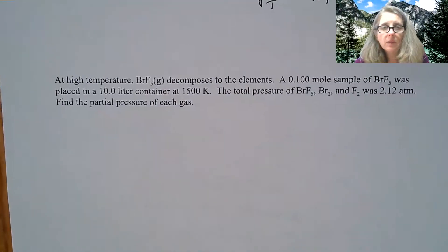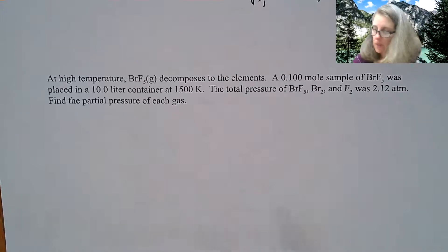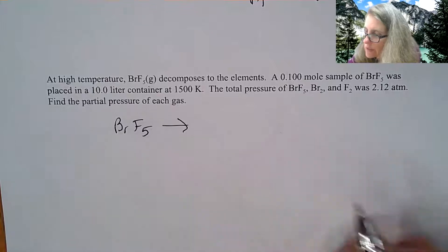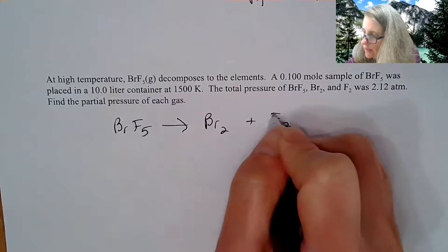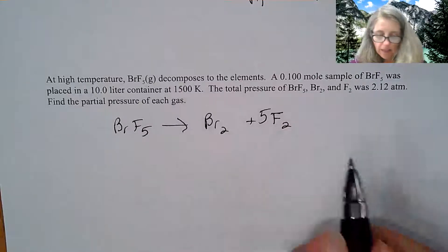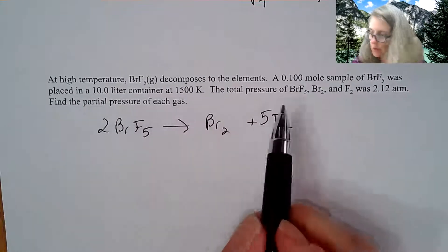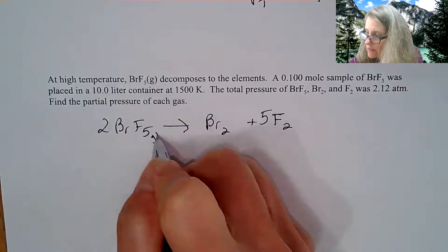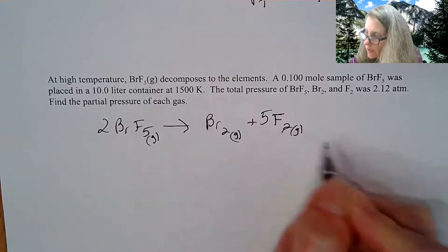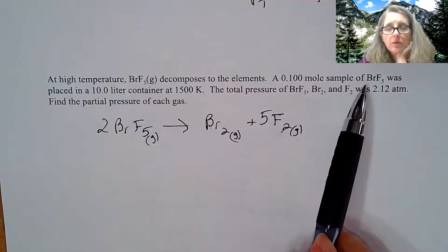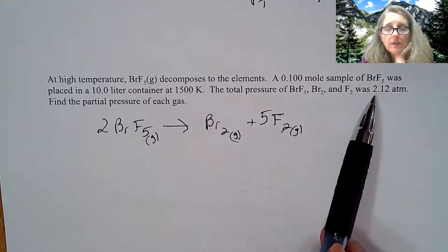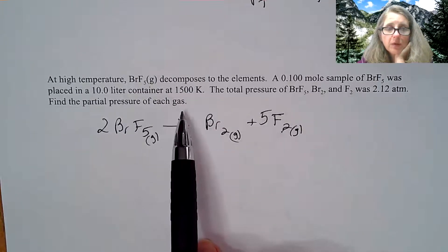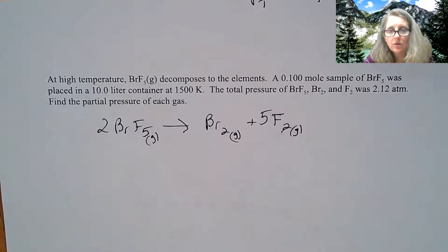See if you could try this next one, using that as a guide. I'm going to give you the balanced chemical equation. I have BRF5 decomposes at high temperature into its elements, so it decomposes into bromine and fluorine, and it is going to be balanced according to 2, 1, and 5, and these are all gases. If I'm given a 0.1 mole sample of BRF5 in a 10 liter container at 1500 Kelvin, the total pressure was 2.12 atm. Find the partial pressure of each gas. See if you could try it, and I'm going to come back and show you the answer.